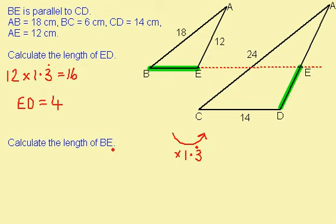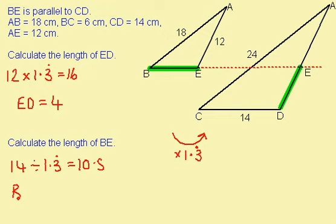I now need to find the length of BE. I know that CD is 14, and to go this way I'm going to divide by 1.3 recurring. So I have 14 divided by 1.3 recurring, which gives me 10.5. So BE is 10.5.